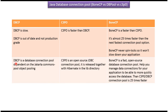DPCP database connection pool depends on Jakarta Commons pool object pooling. C3PO is open source and it is released together with Hibernate in the lib directory. And as discussed, BoneCP is faster than C3PO and DPCP and it is also open source.